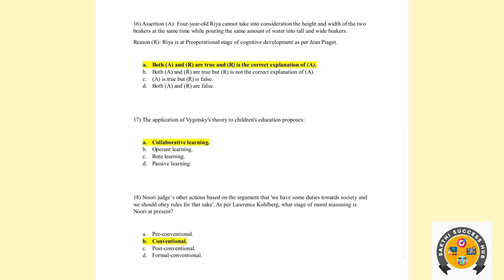Eighteenth question: Nuri judges others' actions based on the argument that we have duties towards society and we should obey rules. We should obey rules and regulations. This is the 4th stage. In the conventional level, there is good-boy/good-girl orientation and law and order orientation. So the answer is law and order orientation — conventional.